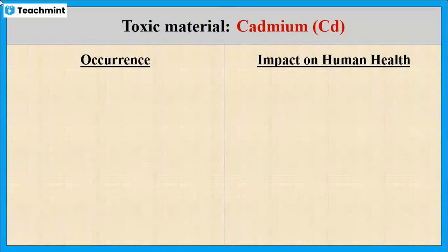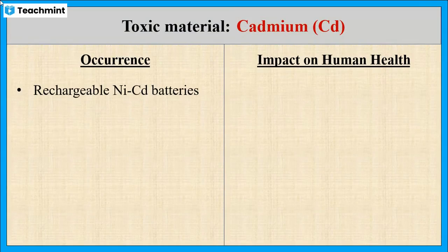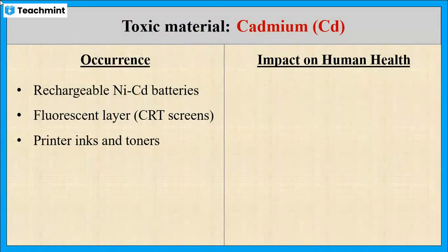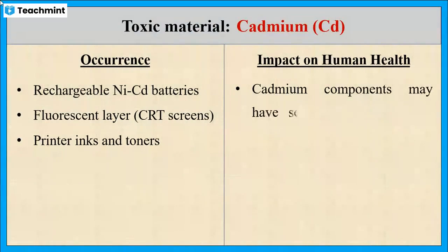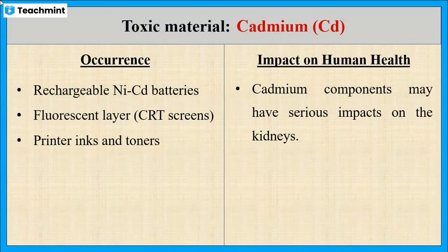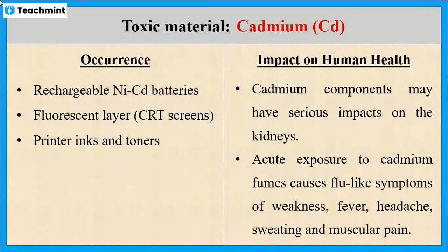The next one is cadmium. It is used in rechargeable nickel-cadmium batteries, in the fluorescent layer, and in printer inks and toners. Cadmium is absorbed through respiration but it can also be ingested with food. It can easily get accumulated in the body and cause symptoms of poisoning. Acute exposure to cadmium causes symptoms like weakness, fever, headache and muscle pain.